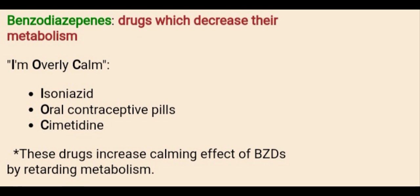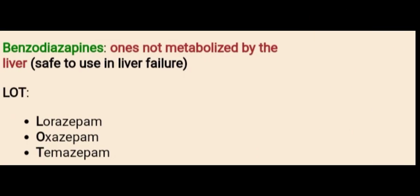Then we have the benzodiazepine drugs which decrease their metabolism. In order to remember these drugs, just remember the sentence: 'I'm overly calm here.' I is for Isoniazid, O for Oral contraceptive pills, and C for Cimetidine.